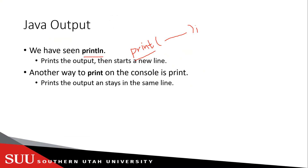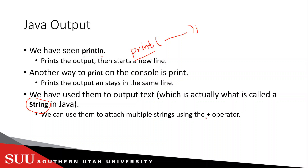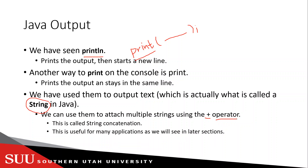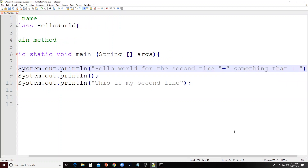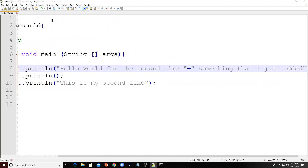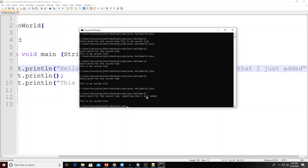The text we've been outputting is called a string in Java — any text in Java is called a string. You can have multiple strings and attach them with the `+` operator; this is called string concatenation. It's useful for many applications as we'll see later in the course. For example, 'hello world for the second time' plus 'something that I just added' — after saving, compiling, and running, both pieces of text are joined together.